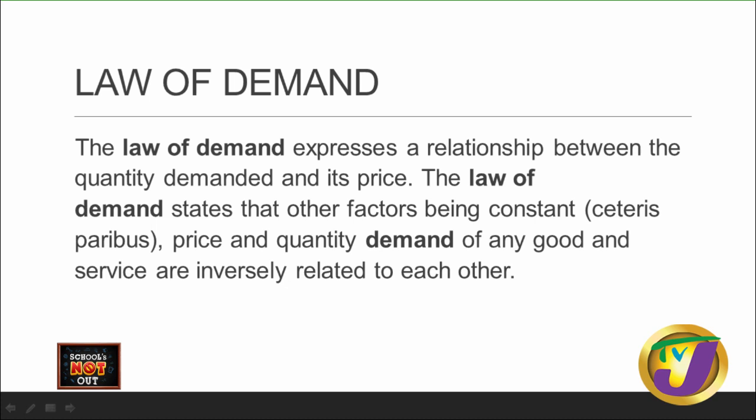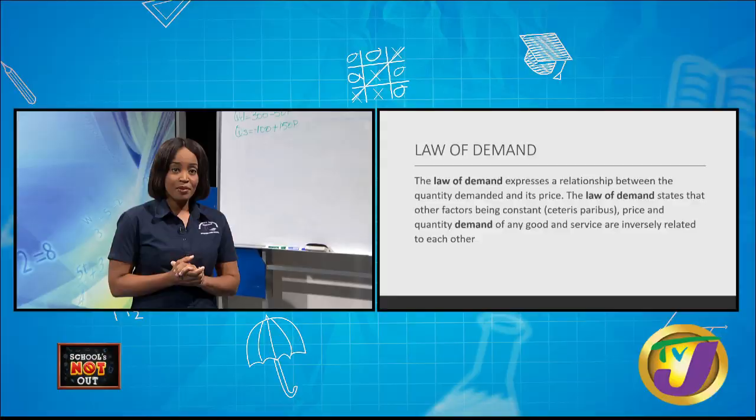Once the price of the good decreases — for instance, if there's a sale — the quantity demanded will increase. This means there is an inverse or indirect relationship between the price of any good or service and the quantity demanded. The indirect relationship means price is going in one direction and quantity demanded is going in the opposite direction.